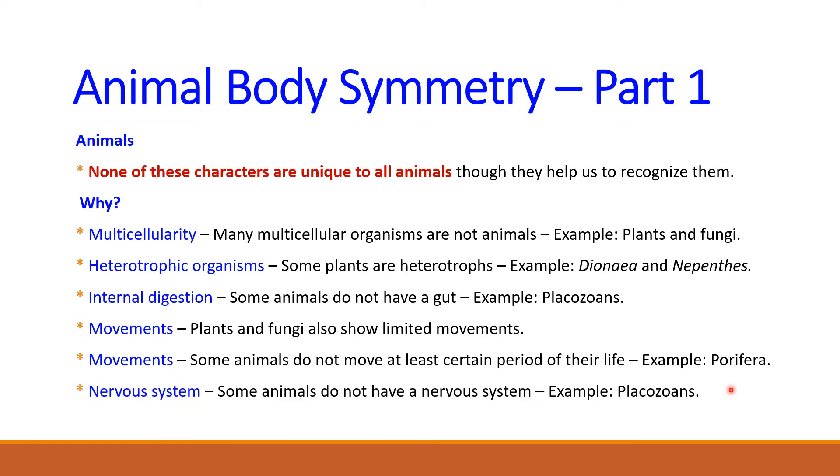The last character is the nervous system. Some animals do not have a nervous system. Again, placozoans. Placozoans do not have any system at all. As such, we cannot use any of these characters to distinguish animals from plants and fungi.